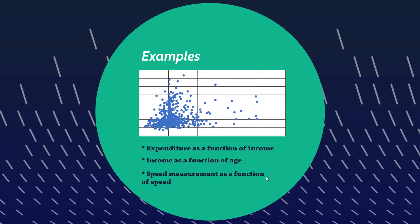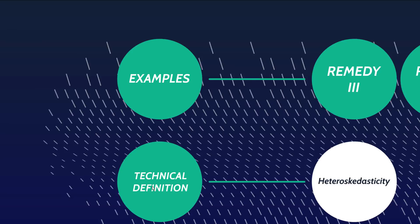Here's an example from physics: if you're trying to measure the speed of something, the faster it goes the more variance you'll have in your speed estimates because it's just harder to measure. Say you're measuring the speed of a rocket — when it's lifting off slowly, your margin of error is small. But once it's out in space, traveling at huge speeds and far away, your margin of error on speed estimates will be a lot larger. There you have it — that is heteroscedasticity.